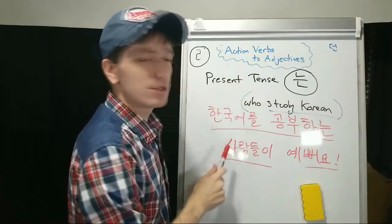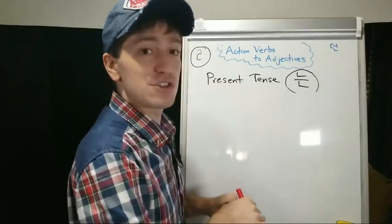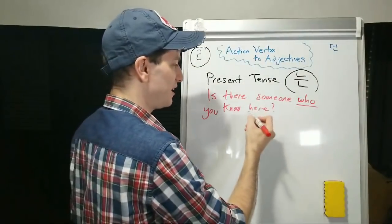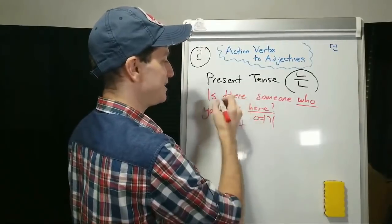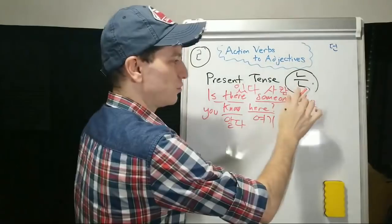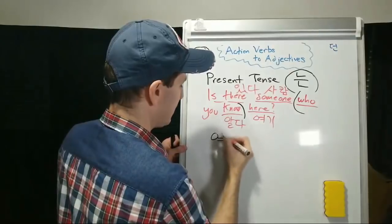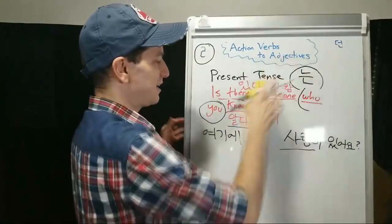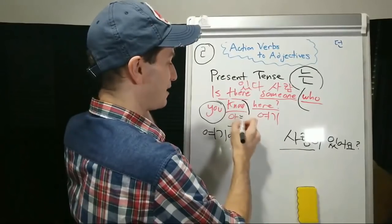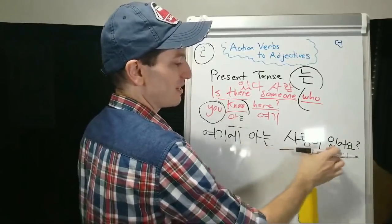We're describing a noun, and you can describe a noun with an adjective — this lesson shows you can also do that with action verbs. For example: is there someone you know here? We need: 여기 for here, 알다 to know, 있다 to exist. Is there a person who you know here? 여기에 사람이 있어요 — is there someone here? For 알다, take the verb stem, remove the 다, then remove the 리을 since the stem ends in 일, then attach 는: 아는. 여기에 아는 사람이 있어요 — is there a person that you know here?